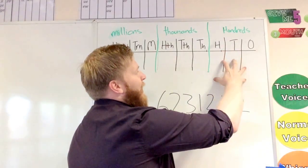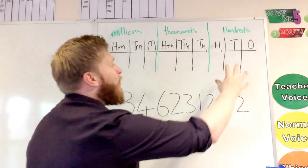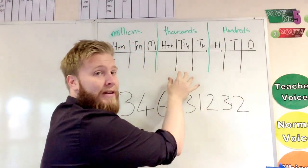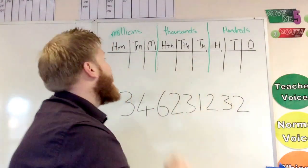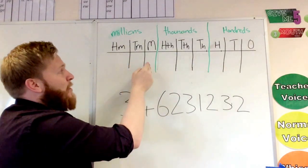So we basically break each section into three and that will help us. You can see we've got our 100 section here which is our 100s, 10s and 1s. Then we've got our 1000s section which are our 100,000s, 10,000s and 1000s, and then we've got our million sections which is 100 millions, 10 millions and millions.